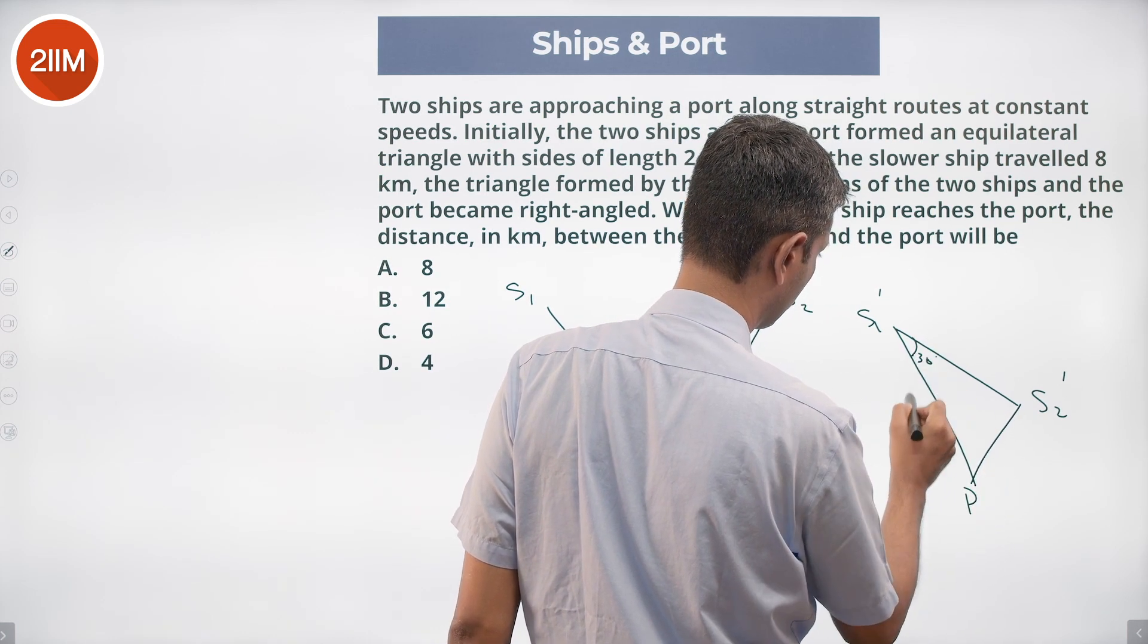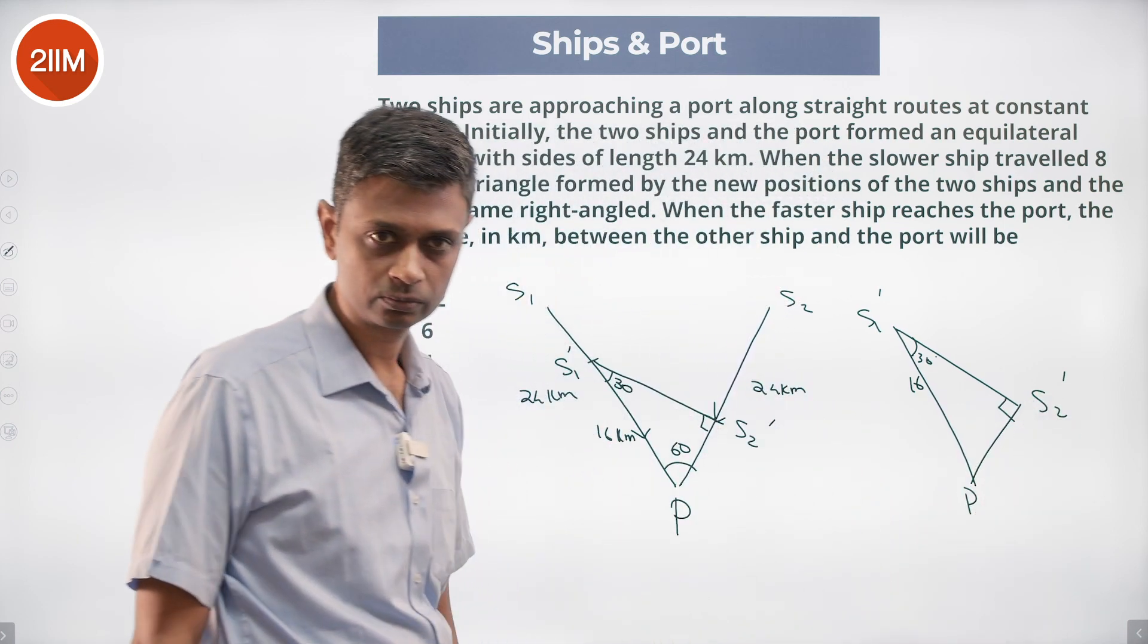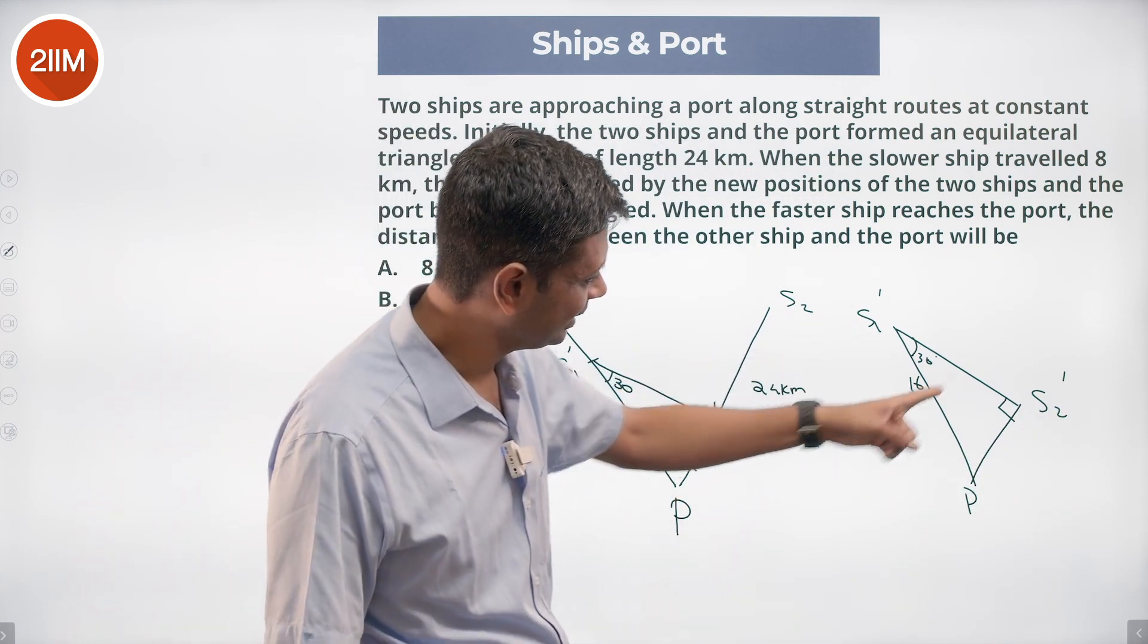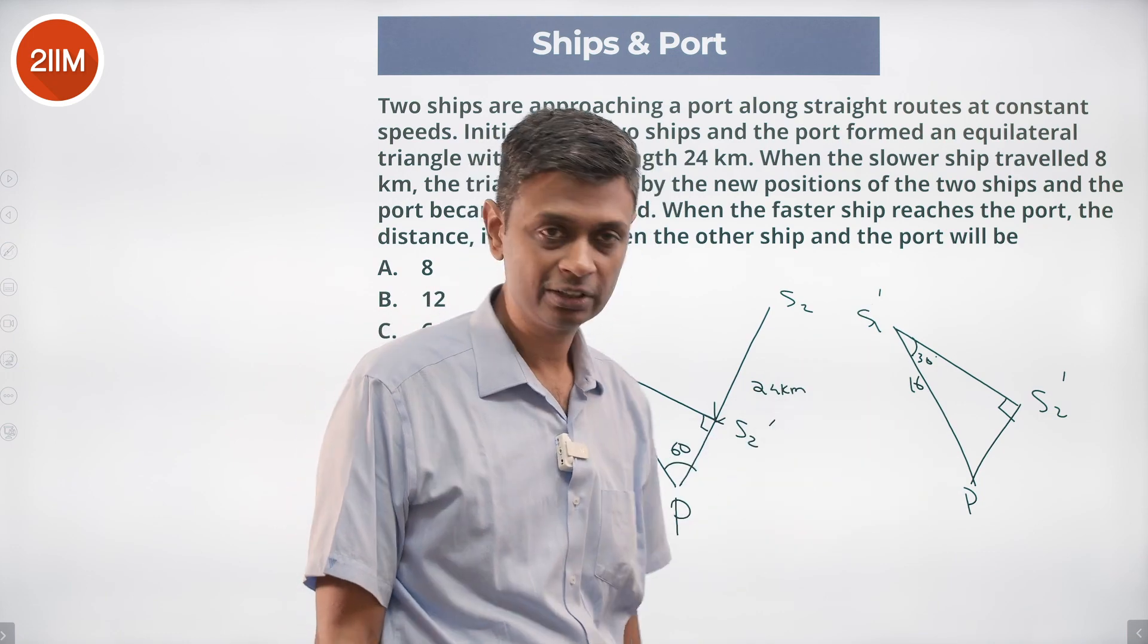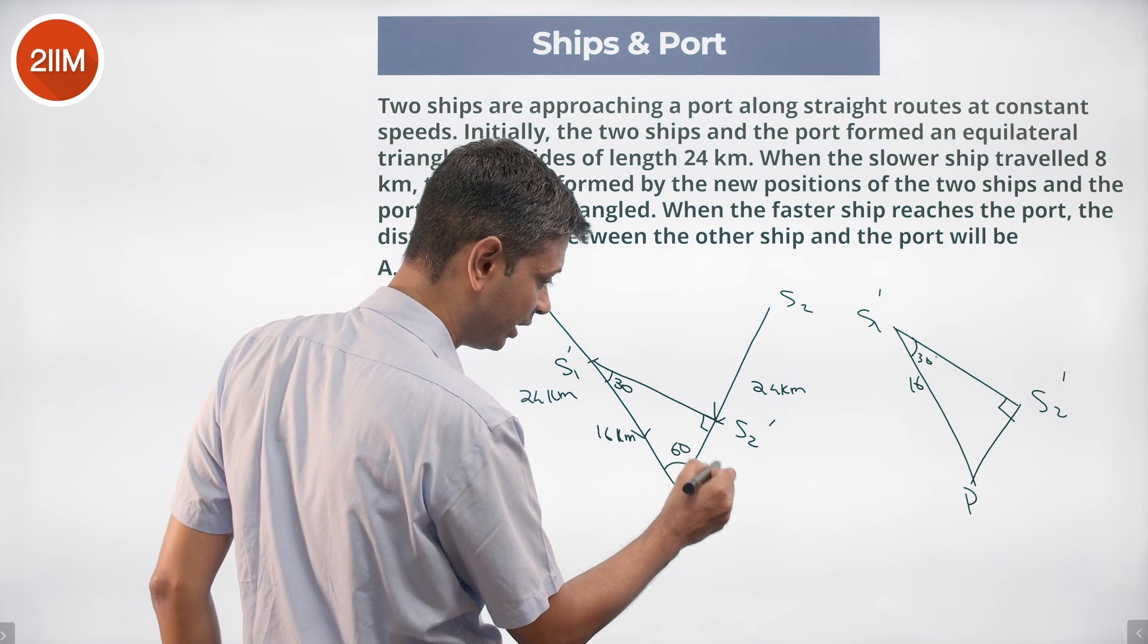This is 30 degrees, this is 16, this is a right angle. Sine 30 is s2 dash p by s1 dash p, that is half. So this is 16, s2 dash p should be 8, this is 8.